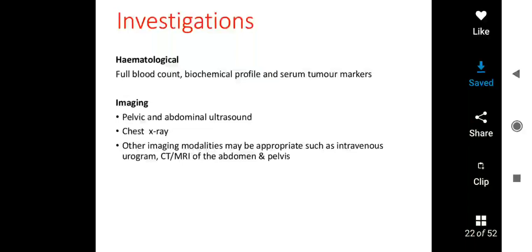Hematological investigations include the full blood count, biochemical profile, and serum tumor markers. Imaging-wise, it is pelvic and abdominal ultrasound, chest X-ray, and other imaging modalities as appropriate, such as IV urogram, CT or MRI of the abdomen and pelvis. Normally, CT is used for ovarian CA.